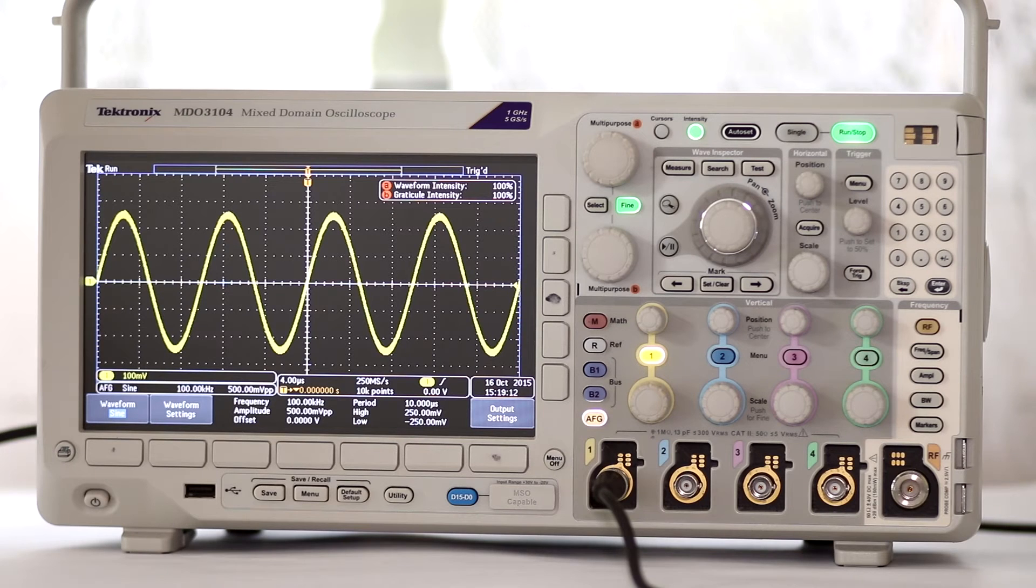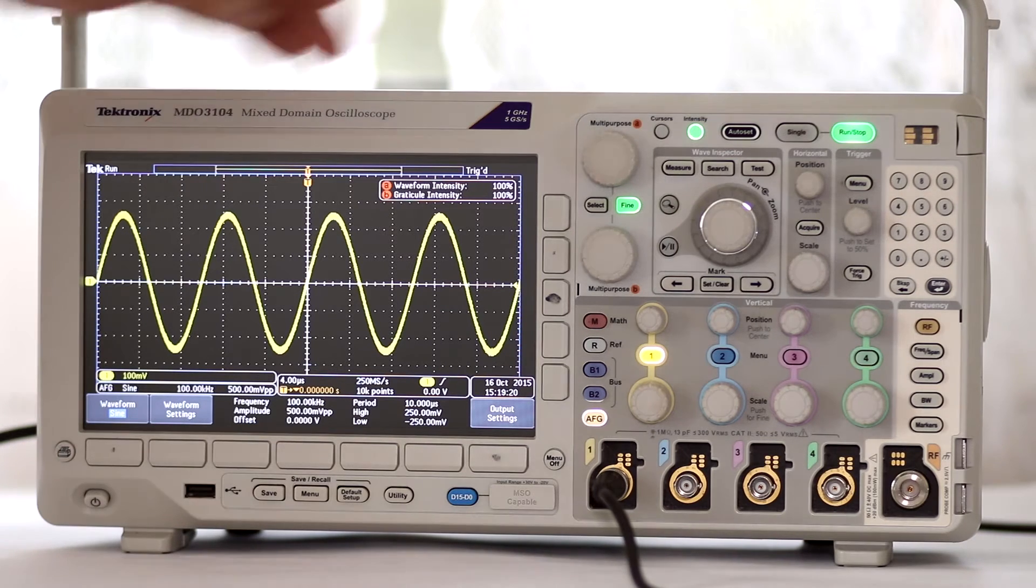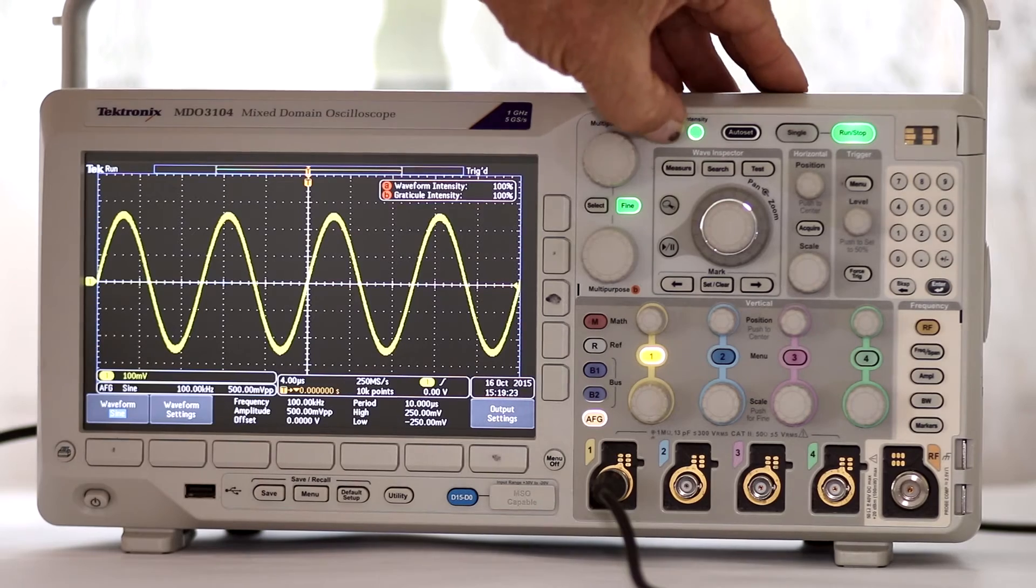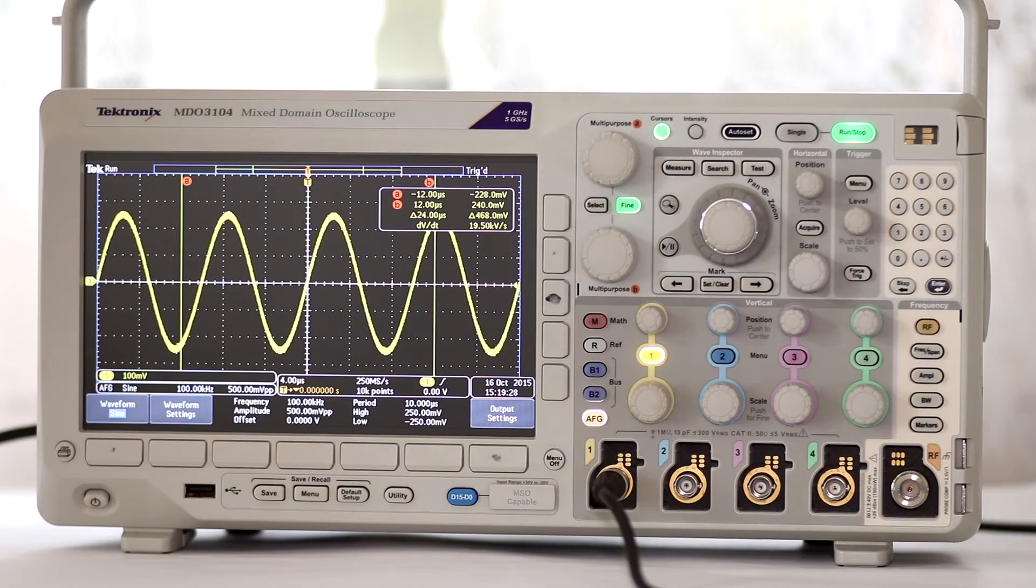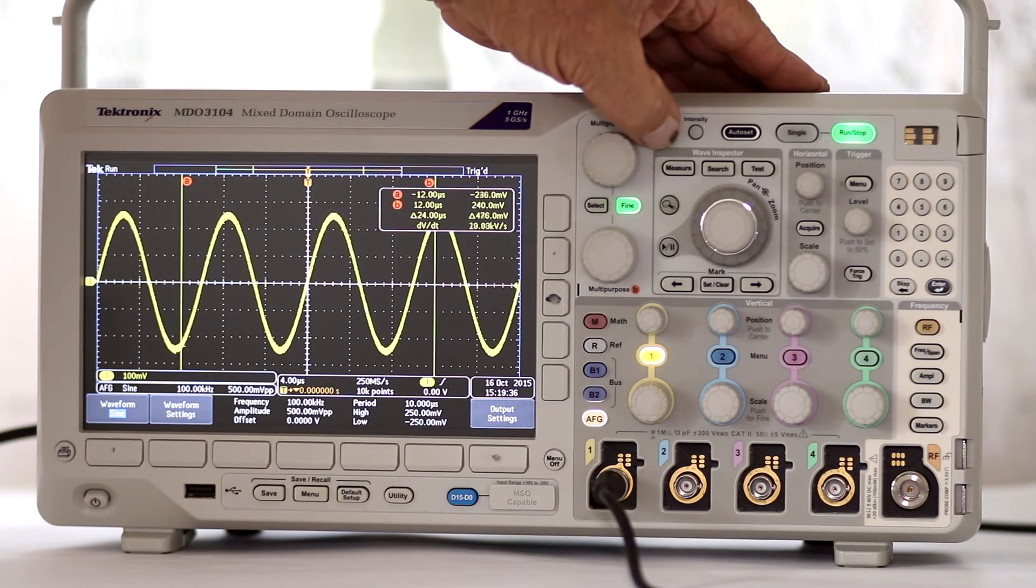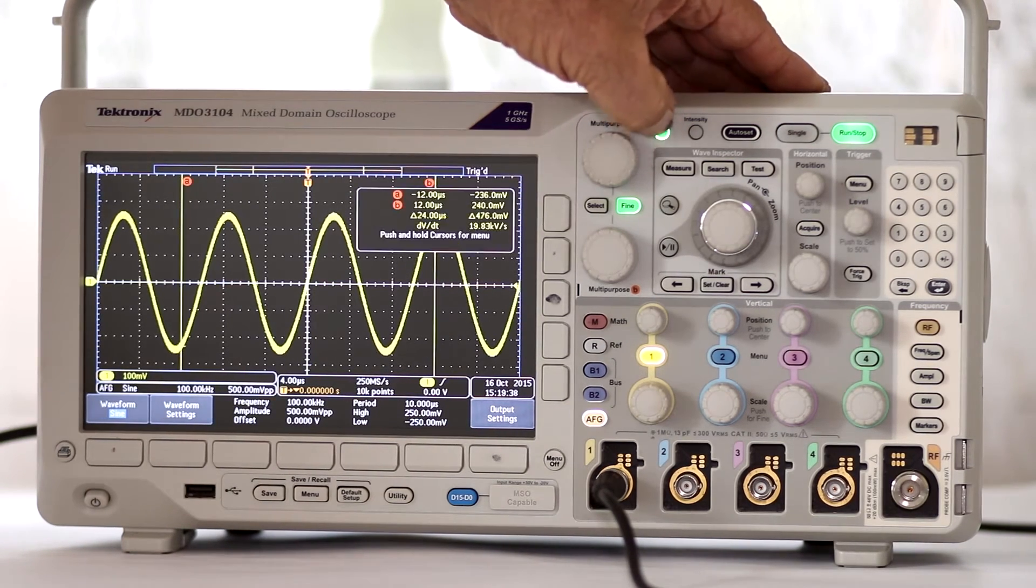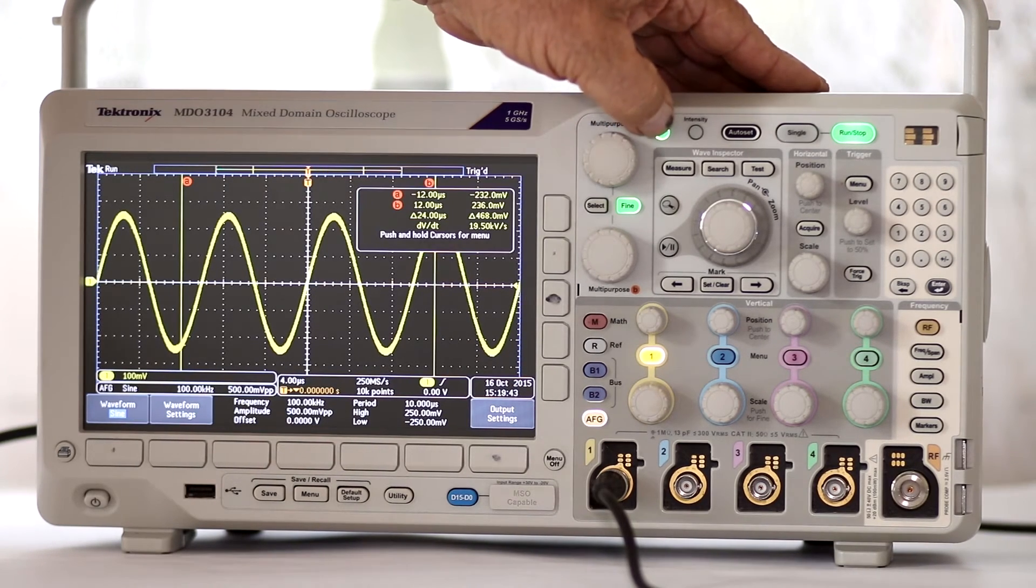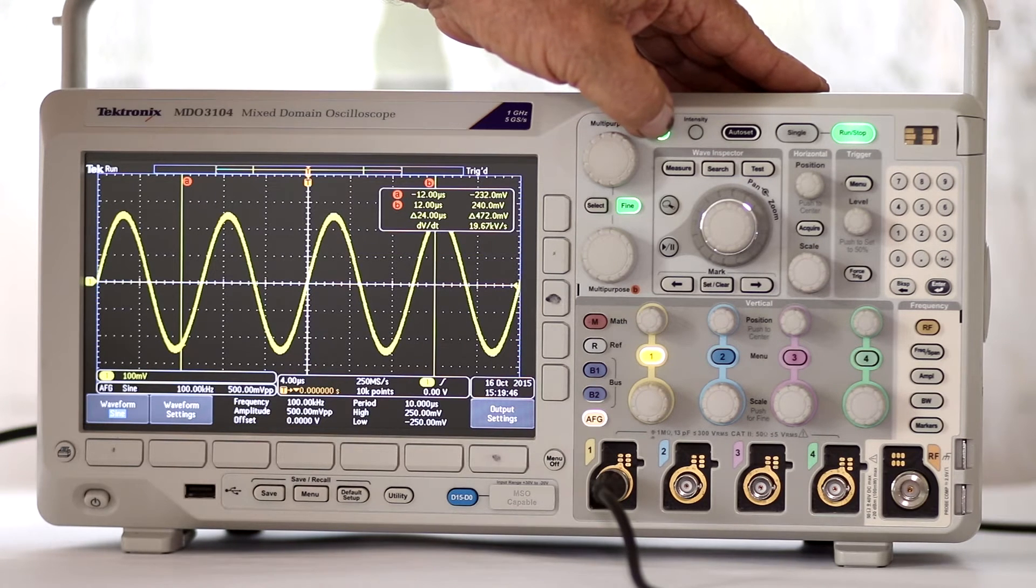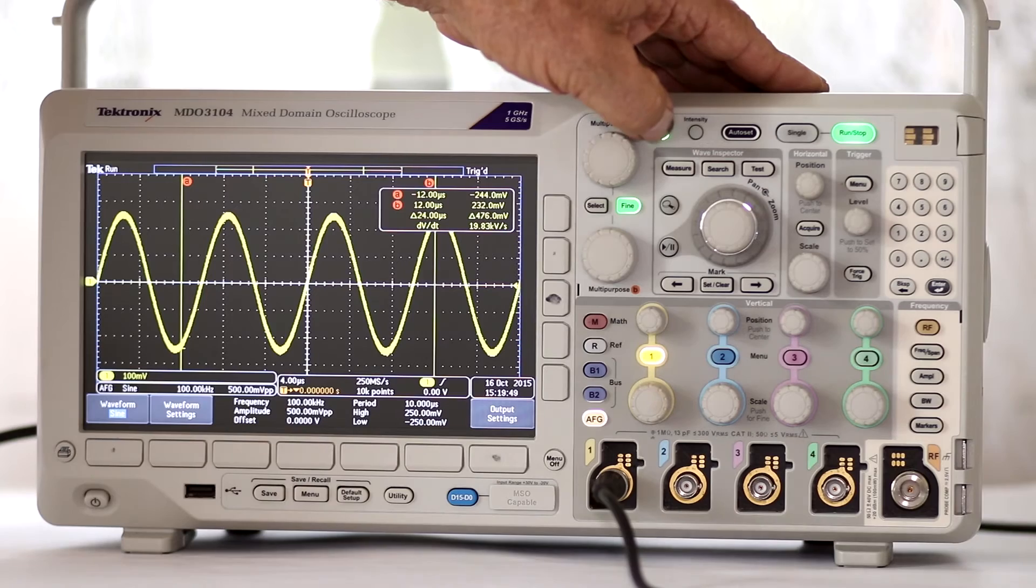With the sine wave displaying in channel 1, which is turned on by default, press the cursor button at the top of the front panel. It lights up, indicating the cursors are active. Pressing this button repeatedly toggles cursors off and on. If you press and hold this button for about a second, the cursor menu appears across the bottom of the display.